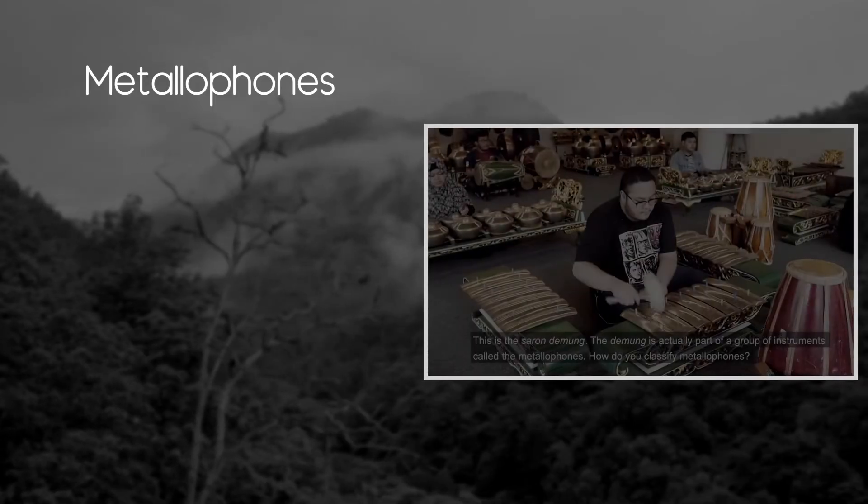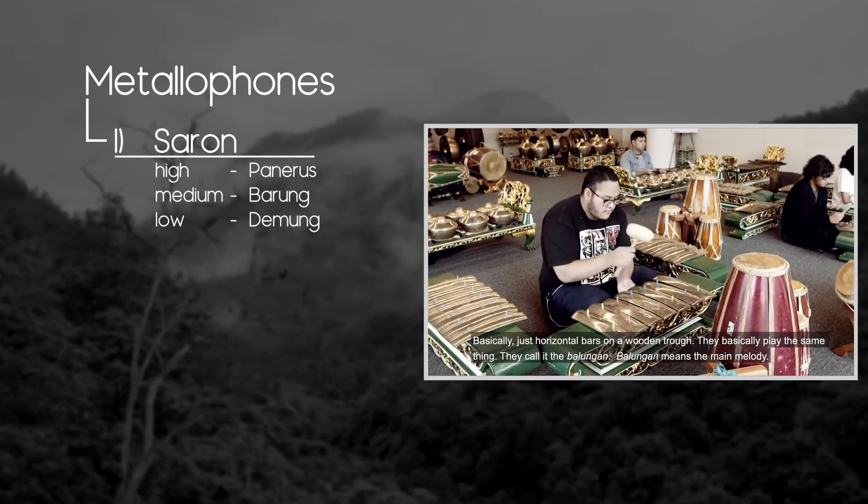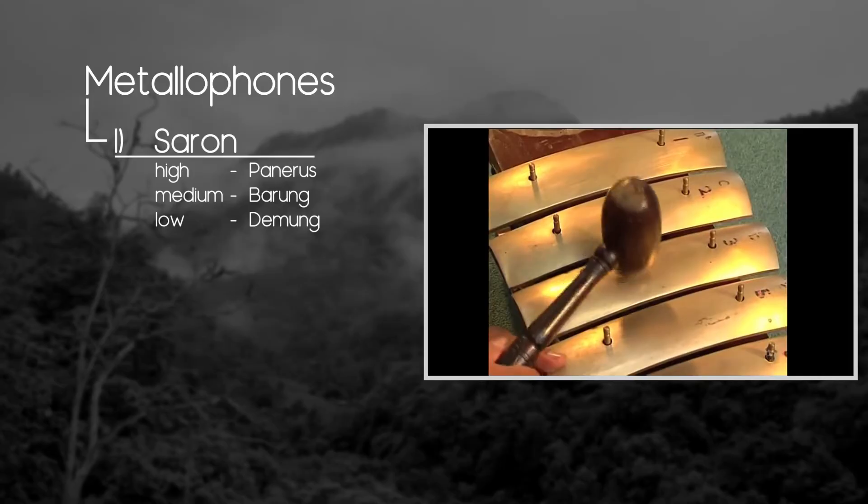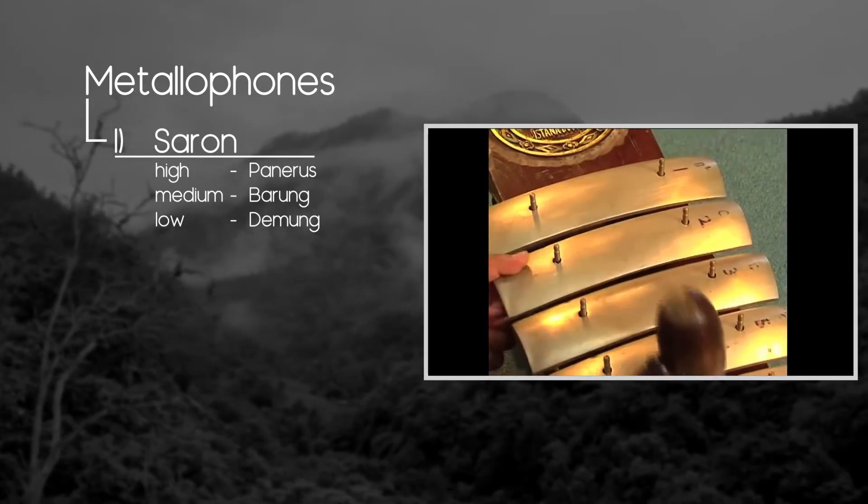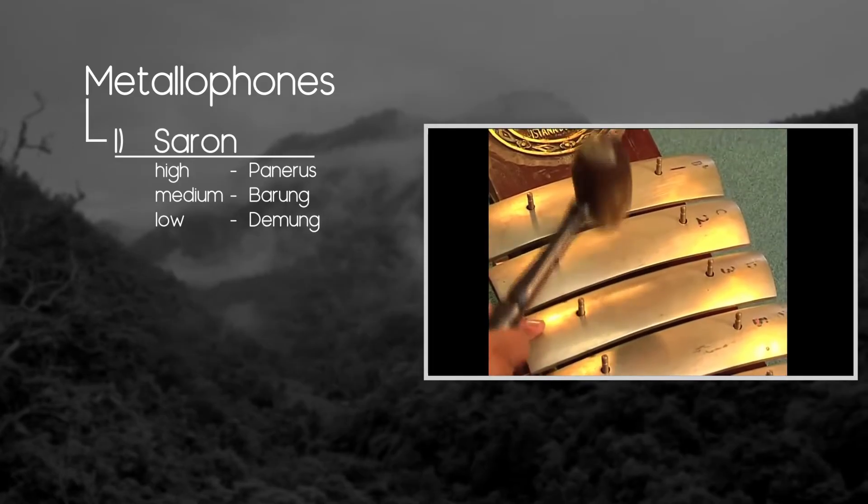And before we start, I want to apologize if I pronounce anything in a wrong way. First, Metallophones is called Saron, and it consists of seven bronze bars on top of resonating frame. It comes in three sizes that cover different registers. It plays a major role in Gamelan as it plays the main melody of the piece.